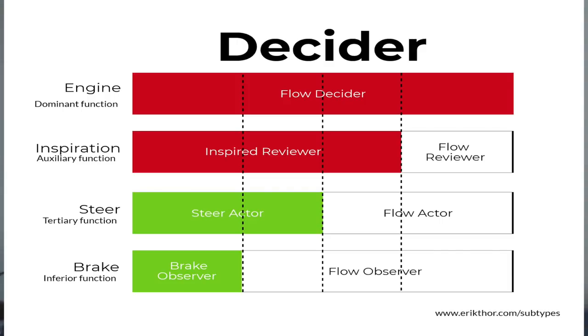The decider type has a break observer function — meaning you avoid thinking about certain things. You don't want to consider certain facts or information because you see them as a threat to your decisions, a distraction to your goals. You don't want to hear things that could go against your plans. There is a desire to say: stop, wait, before you research something new until you have finished what you are currently working on.